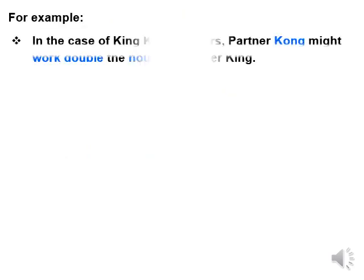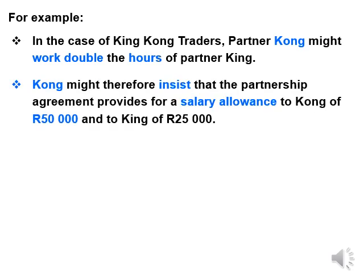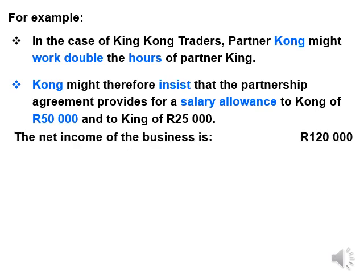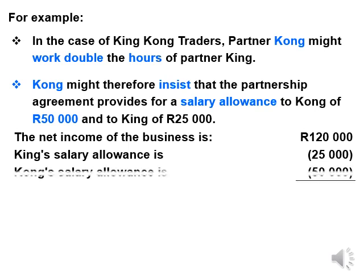So let's look at an example. In the case of King Kong Traders, partner Kong might work double the hours of partner King. Kong might therefore insist that the partnership agreement provides for a salary allowance to Kong of $50,000 and to King of $25,000. If we now say that the net income, that is the profit of the business, is $120,000, King's salary allowance is $25,000 and Kong's salary allowance is $50,000.